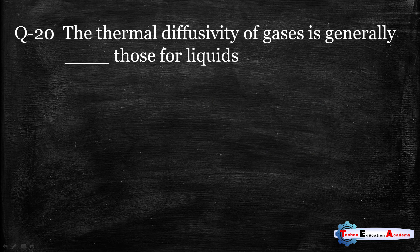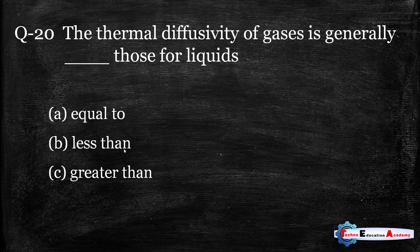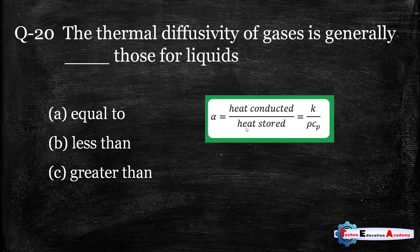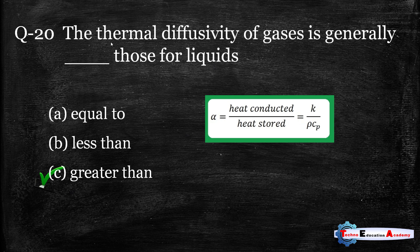Question number twenty: the thermal diffusivity of gases is generally — greater than, less than, or equal to — those for liquids? Thermal diffusivity α = k/(ρ·Cp), which is the ratio of heat conducted to heat stored. The thermal diffusivity of gases is generally greater than those for liquids, so the correct answer is option C.